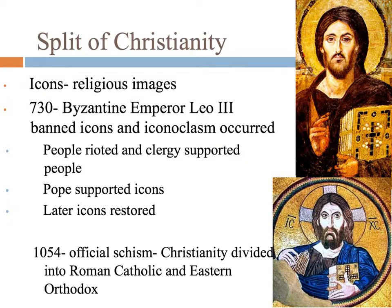For example, in 730 the Byzantine emperor tried to ban the icons — the people revolted, and the icons came back. All these differences resulted in the official split of Christianity, called a schism, meaning split, in 1054. From that point on Christianity was divided: in the West they had Roman Catholic, and in the East they had Orthodox Christianity, which was the Byzantines.